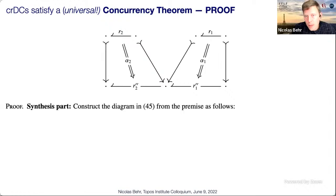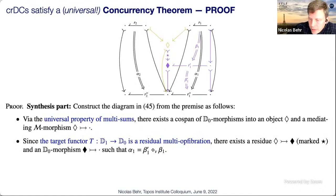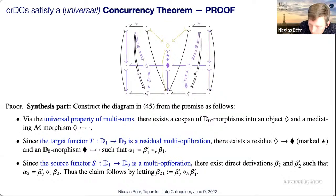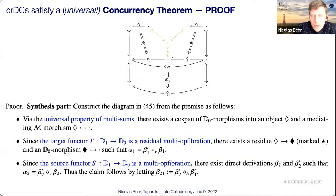Producing the two vertically stacked red squares, you then use that the source functor is a multi-op fibration to get the two vertically stacked blue squares on the left, and finally horizontally compose the bottom two to get the curvy face. All together this is exactly the synthesis part of the concurrency theorem. The converse is equally nice and requires the horizontal decomposition property: exhibit two squares in the back whose horizontal composition gives the front square, then vertically compose to get the two-step sequence shape.